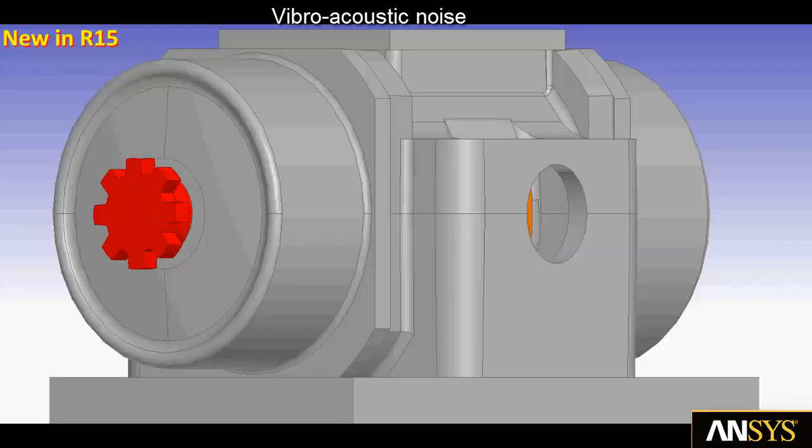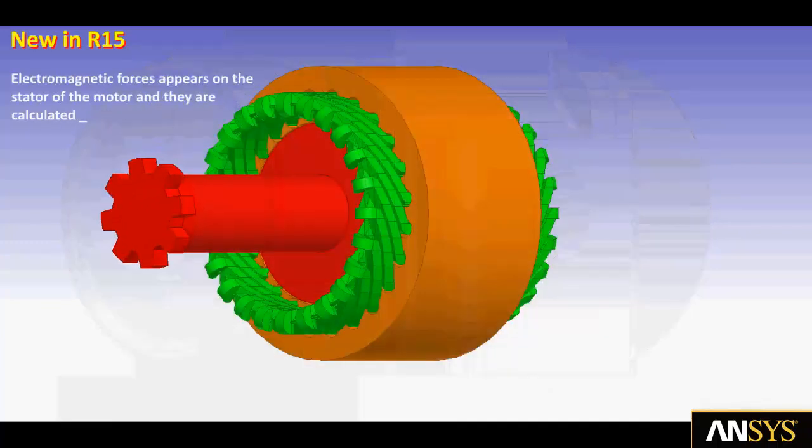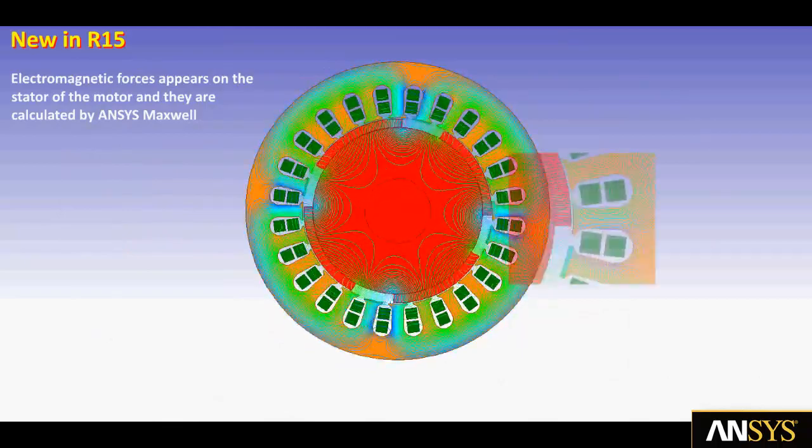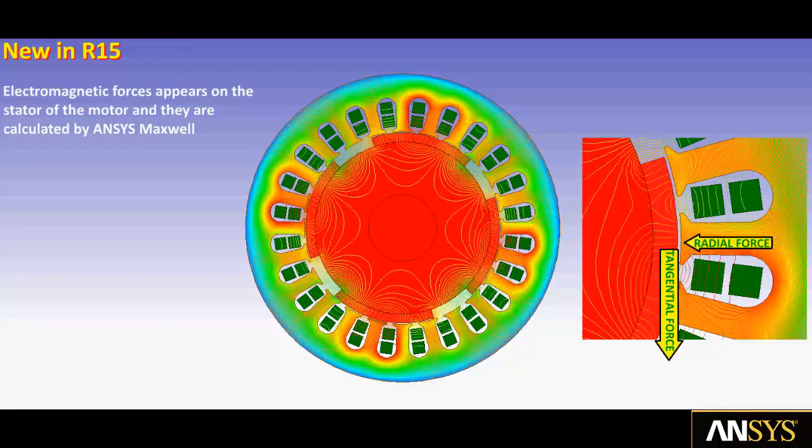The final analysis we will demonstrate is vibro-acoustic noise of the electric motor. Electromagnetic forces on the motor stator are computed by Maxwell. The result is a collection of radial and tangential forces that can deflect the stator and cause harmonic motion that induces the acoustic noise.